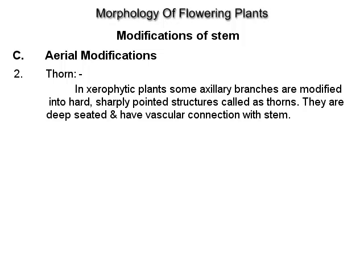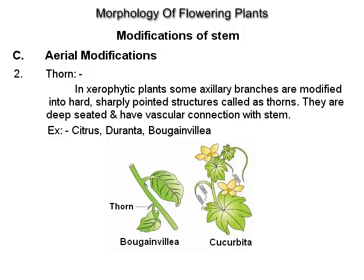Thorn: in xerophytic plants, some axillary branches are modified into hard, sharply pointed structures called thorns. They are deep-seated and have a vascular connection with the stem, example Citrus, Duranta and Bougainvillea.